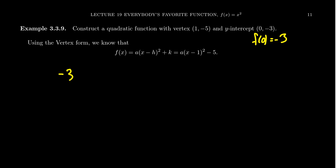So negative 3, which is going to equal f of 0. Using the formula here, we see that's equal to a times 0 minus 1 squared minus 5, which simplifies to be a times negative 1 squared minus 5, which is going to be a minus 5.